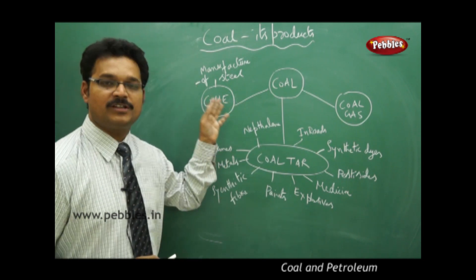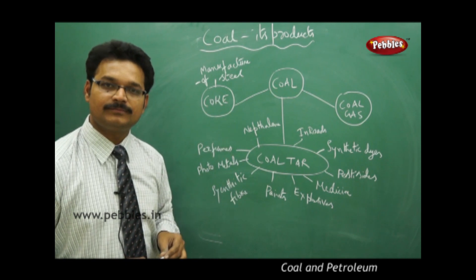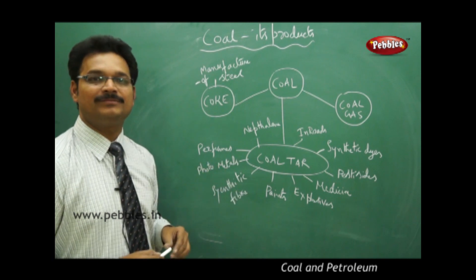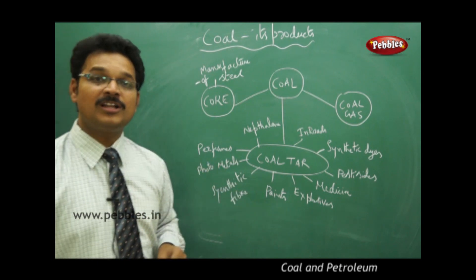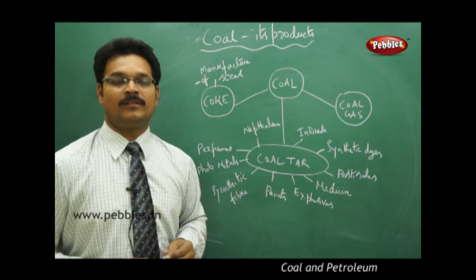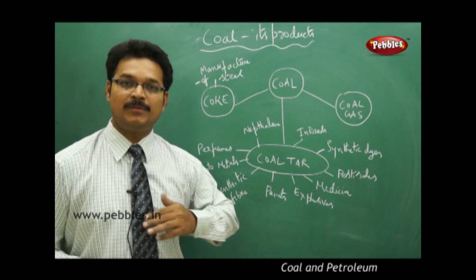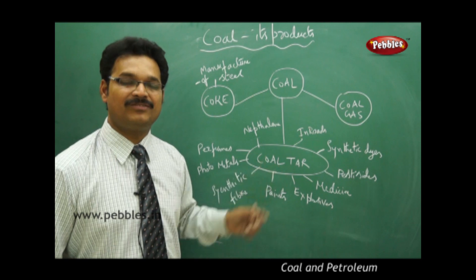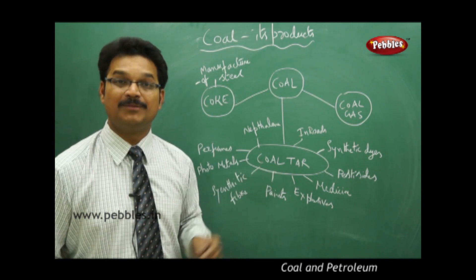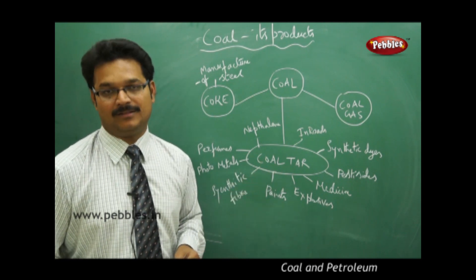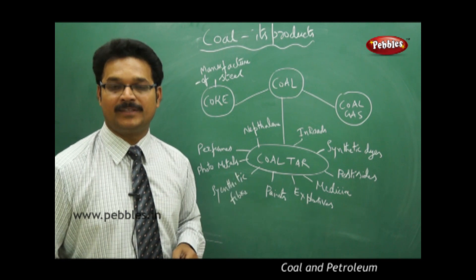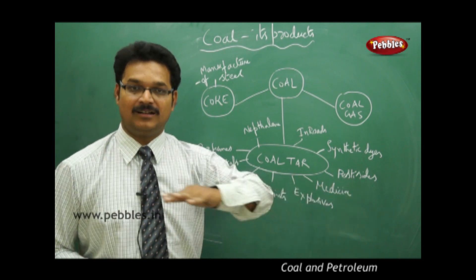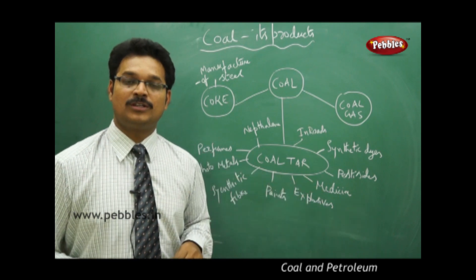Coke is used in the manufacture of steel. Now, coal tar — see how many applications it has. Generally we use the word 'tar road.' The roads which are made by tar — that tar is actually coal tar, which is very tough and very black in color and very strong.